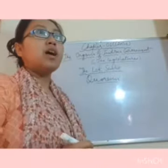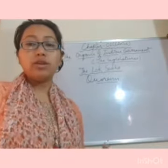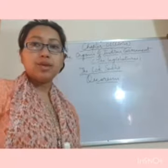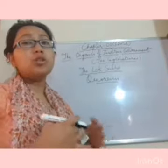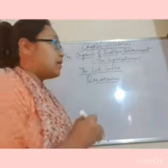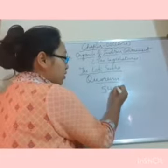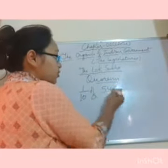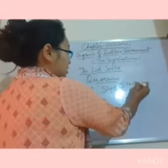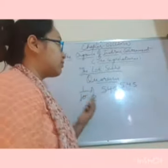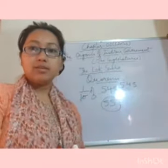Now let's move to the quorum of the house. Quorum is the minimum number of members that must be present before a meeting of the house can start. Quorum is one-tenth of the total members. Since Lok Sabha currently has 545 members, one-tenth of 545 gives us approximately 55 members. So 55 members must be present to start a Lok Sabha meeting.